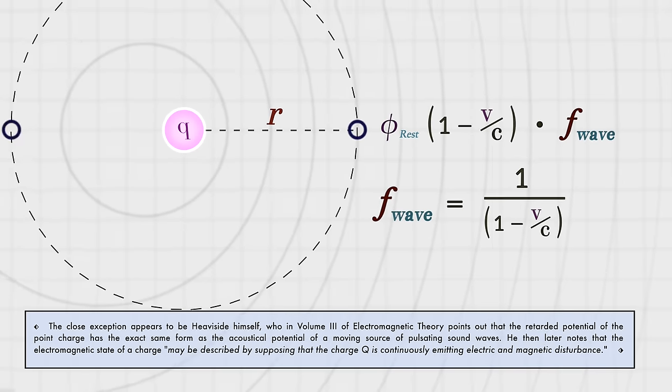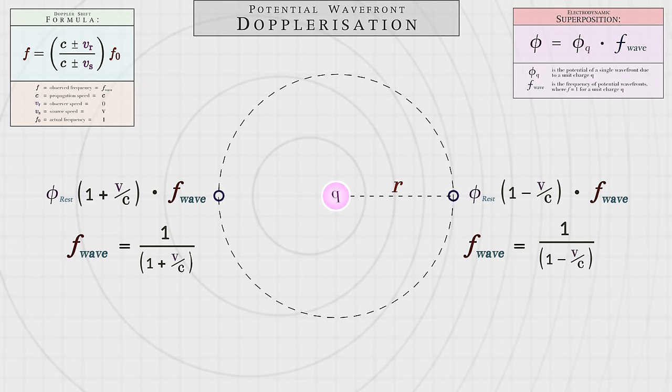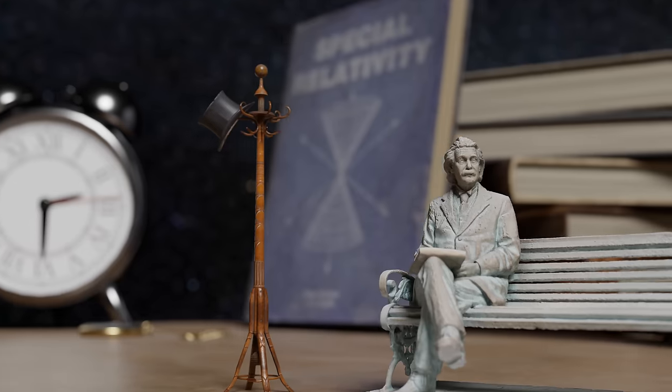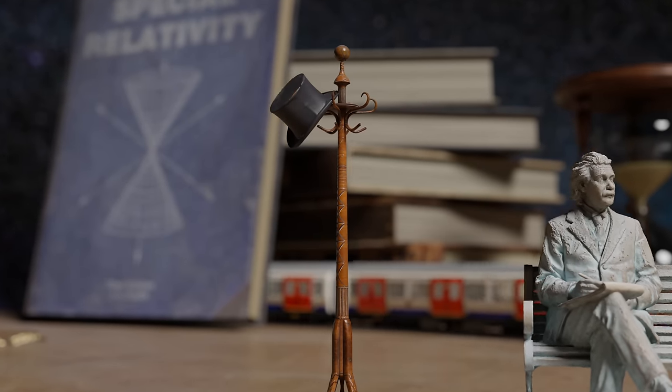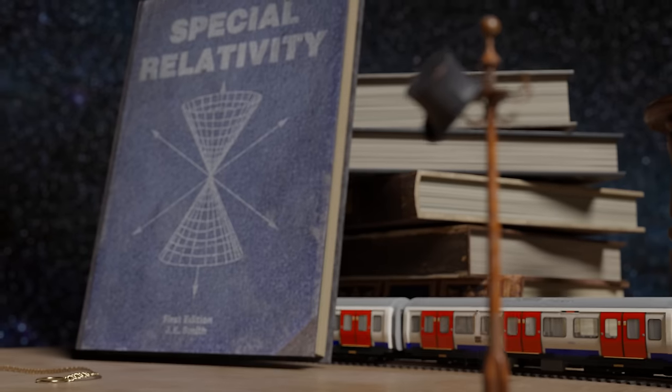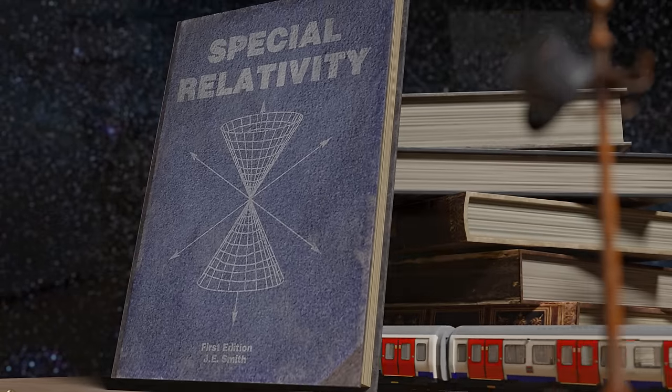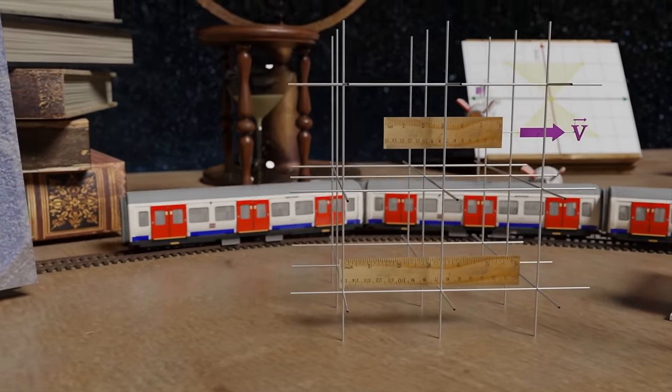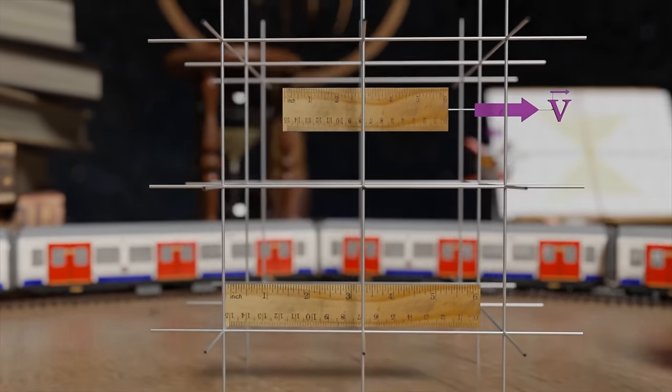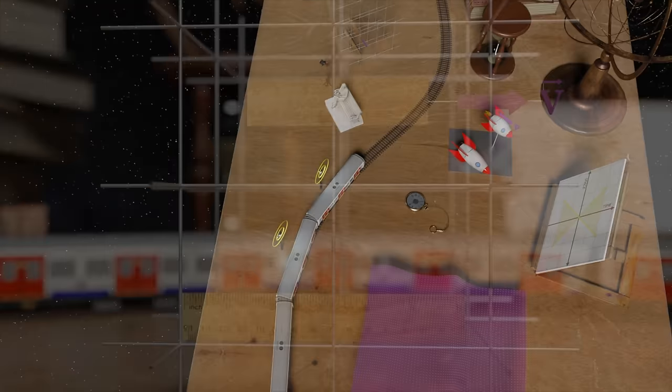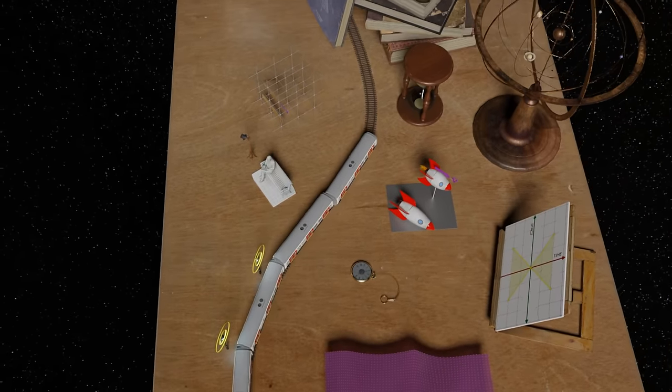So, is that it, then? Do we get to hang up our hats and declare we have solved the mysteries of relativity? That we have both derived the principle of relativity and uncovered the mechanism behind length contraction? Well, not quite yet, because there are two lingering issues at hand.